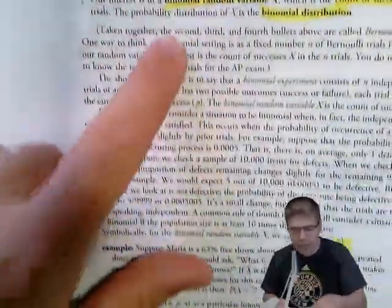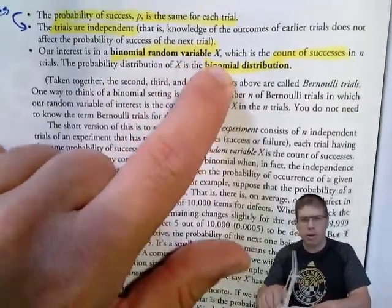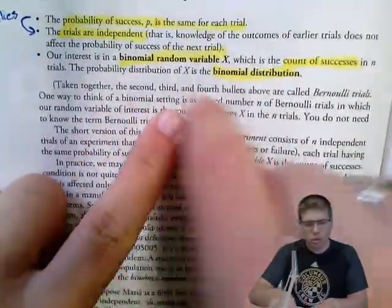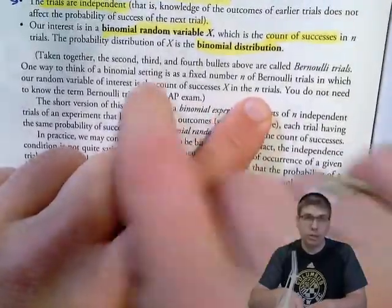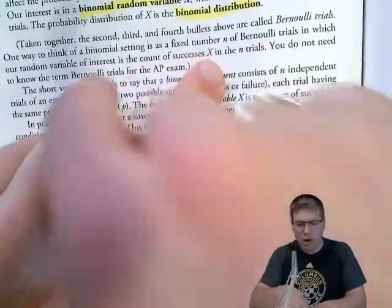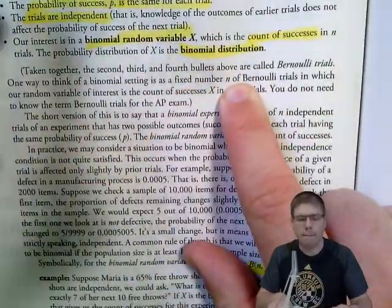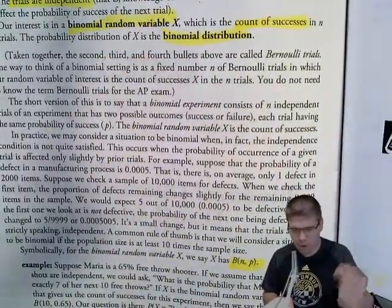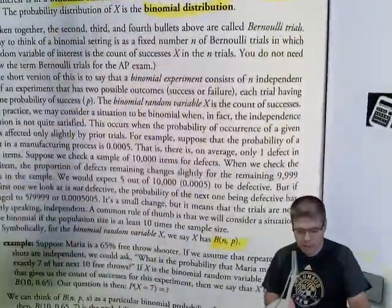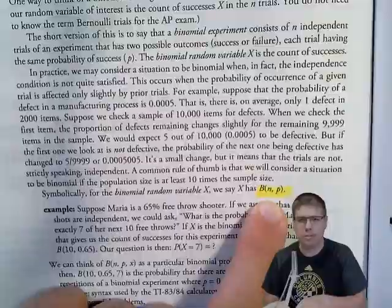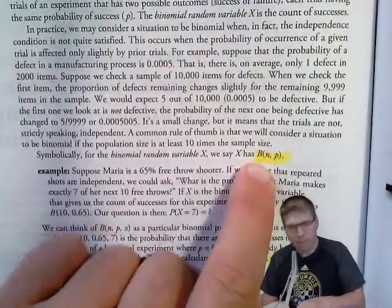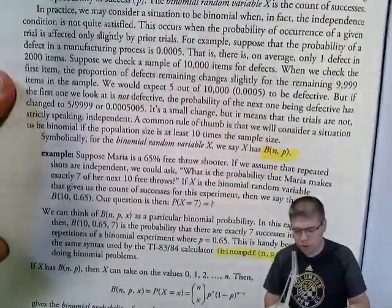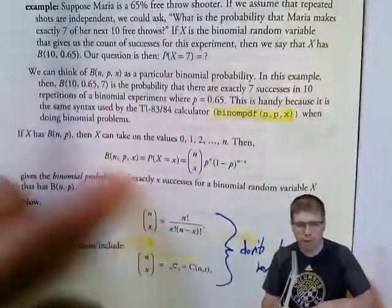So you end up with a binomial random variable X, which is the number of successes out of those trials. The binomial distribution covers zero through n successes, each with an associated probability. We use the shorthand notation B(n, p), where n is the number of trials and p is the probability of success — those are the two important parameters.